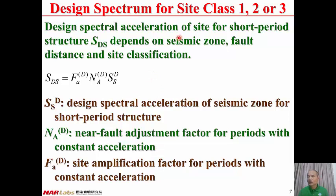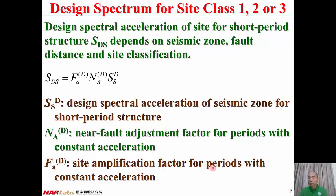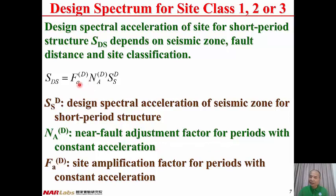The design spectral acceleration of the site for short period structure, SDS, depends on three factors. One is the location, specified by the seismic zone. The second is the fault distance, specified by NAD, the near fault adjustment factor for periods with constant acceleration. The third factor is site classification, specified by FAD, the site amplification factor for periods with constant acceleration. Therefore, SDS is the product of SSD (design spectral acceleration of seismic zone for short period structure), multiplied by NAD, multiplied by FAD.